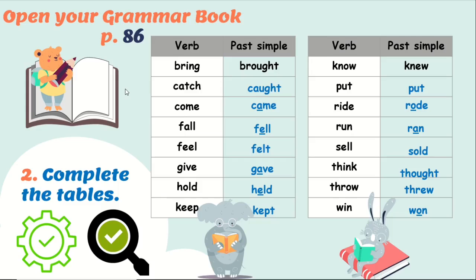With some verbs we only change a vowel — for example: come / came, fall / fell, hold / held. Sometimes the whole word changes entirely — eat / ate, feel / felt, keep / kept, catch / caught. Sometimes the verbs will stay the same — put / put.